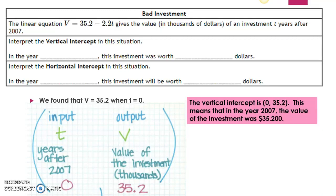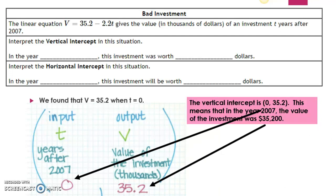That means the vertical intercept is zero comma 35.2. This means that in the year 2007, the value of the investment was $35,200. I know that the year is 2007 because t represents years after 2007 — if t equals zero, it's been zero years since 2007. And I know the value of the investment was $35,200 because v equals 35.2, and in thousands, 35.2 represents $35,200.